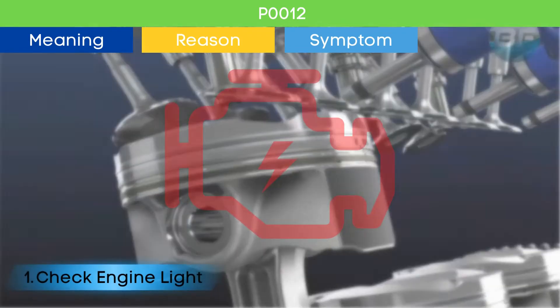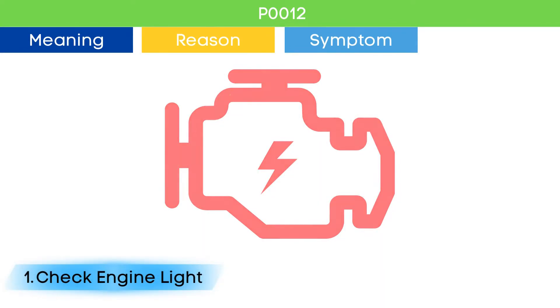Symptom number one: check engine light. The check engine light comes on if there are any active trouble codes related to EMS.